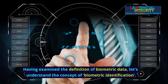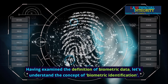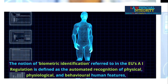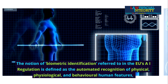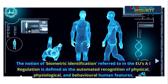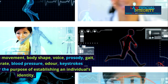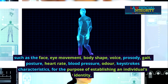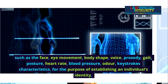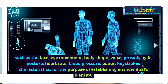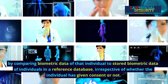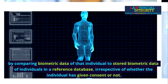Having examined the definition of biometric data, let's understand the concept of biometric identification. The notion of biometric identification, referred to in the EU's AI regulation, is defined as the automated recognition of physical, physiological, and behavioral human features, such as the face, eye movement, body shape, voice, prosody, gait, posture, heart rate, blood pressure, odor, and keystroke characteristics, for the purpose of establishing an individual's identity by comparing biometric data of that individual to stored biometric data of individuals in a reference database.